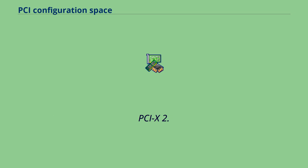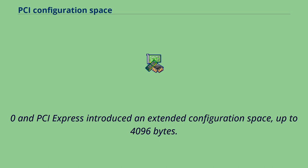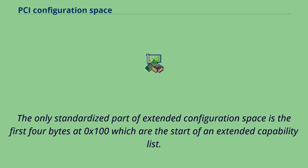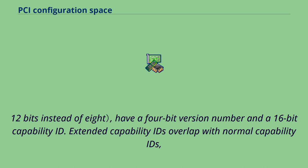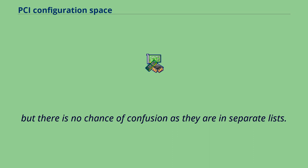PCI-X 2.0 and PCI Express introduced an extended configuration space up to 4096 bytes. The only standardized part of extended configuration space is the first 4 bytes at 0x100, which are the start of an extended capability list. Extended capabilities are much like normal capabilities except they can refer to any byte in the extended configuration space by using 12 bits instead of 8, and have a 4-bit version number and a 16-bit capability ID. Extended capability IDs overlap with normal capability IDs, but there is no chance of confusion as they are in separate lists.